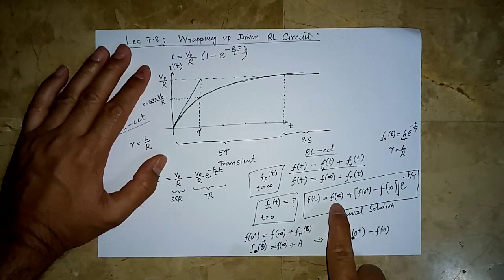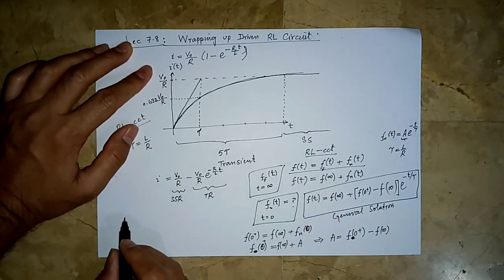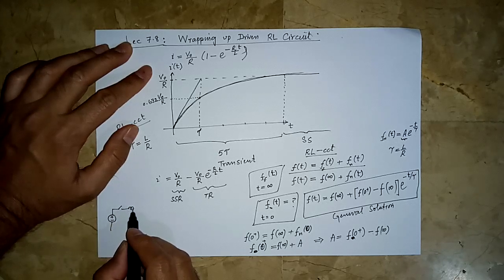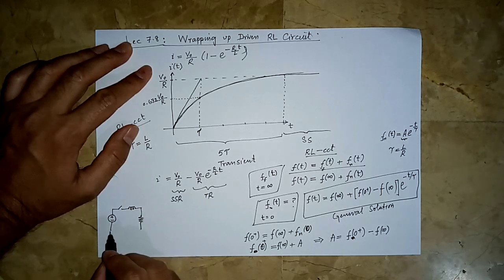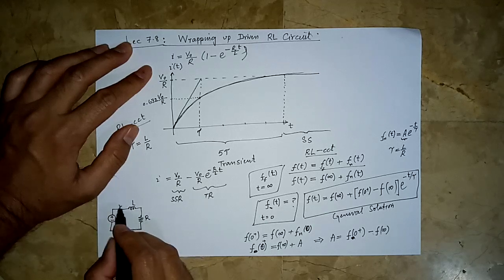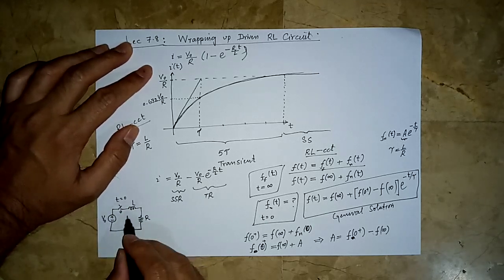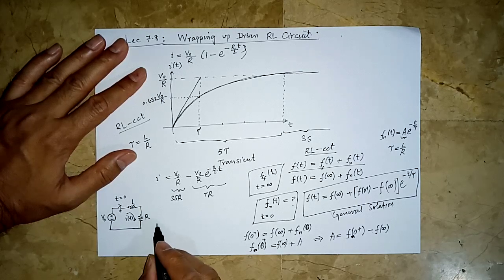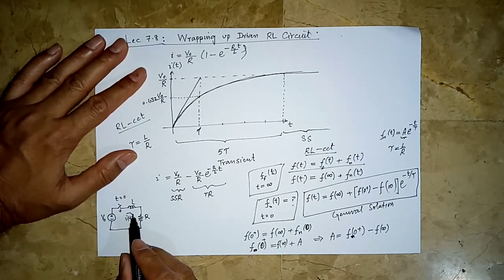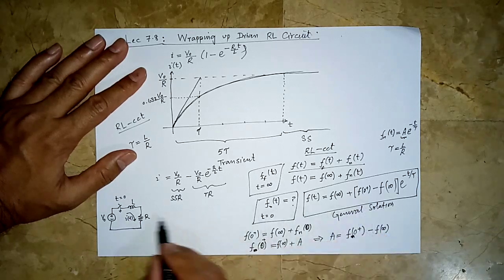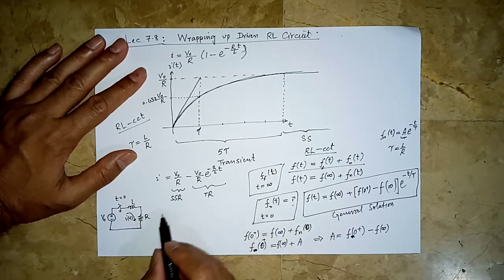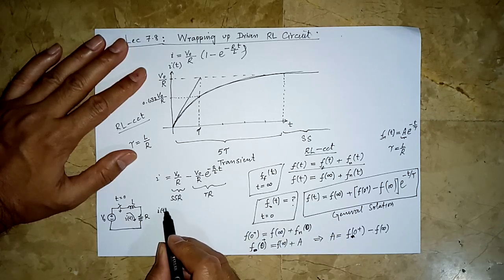Now knowing this general solution, let us solve that circuit again — solve it as if for the first time. So at T equal to 0 there is a switch that is going to close. We are not going to write the KVL equation, no differential equation, no detailed solution — only this general solution. What we need to find is the expression for current, and the general solution says: find its value at infinity.